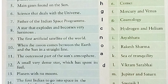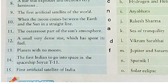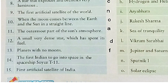Now let's read out number 13: planets with no moons. They are Mercury and Venus — they don't have any moons. So, please write point F here. Now let's read out number 14: the first Indian to go into space in the spaceship Soyuz T-11. Yes, he was Rakesh Sharma and the answer is given in option J. So, please write J here.